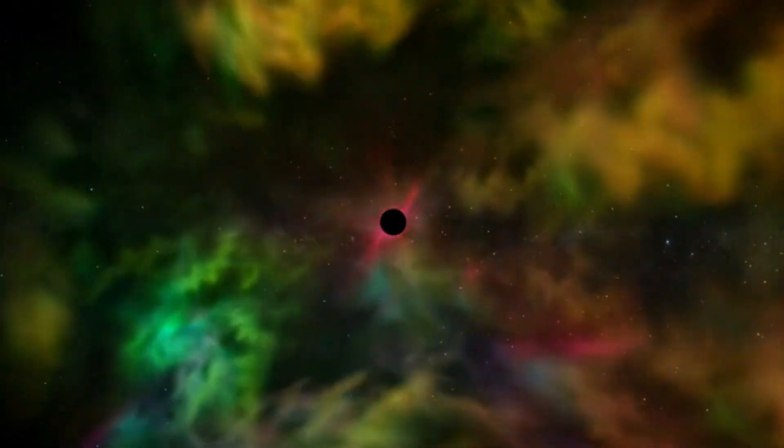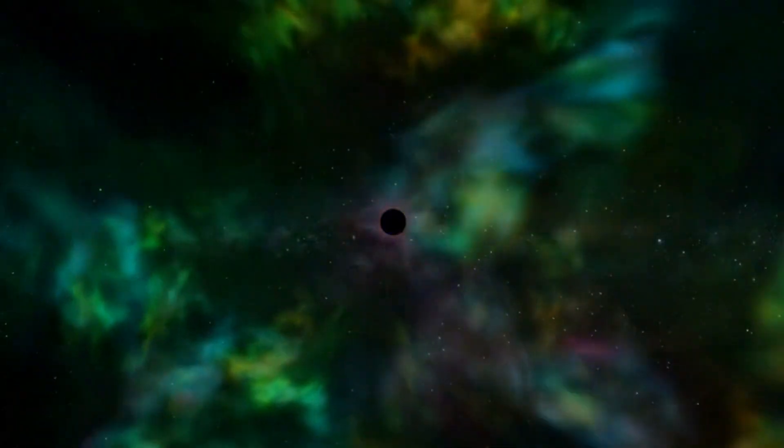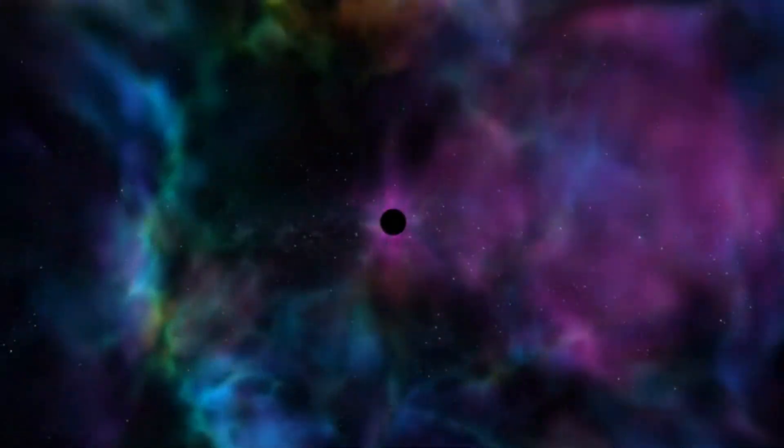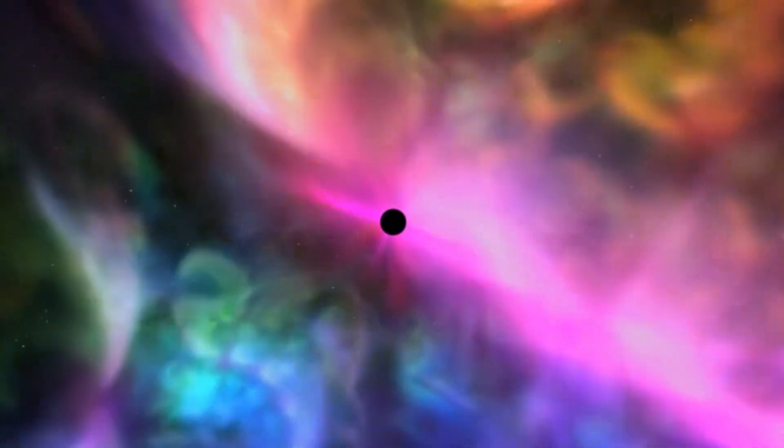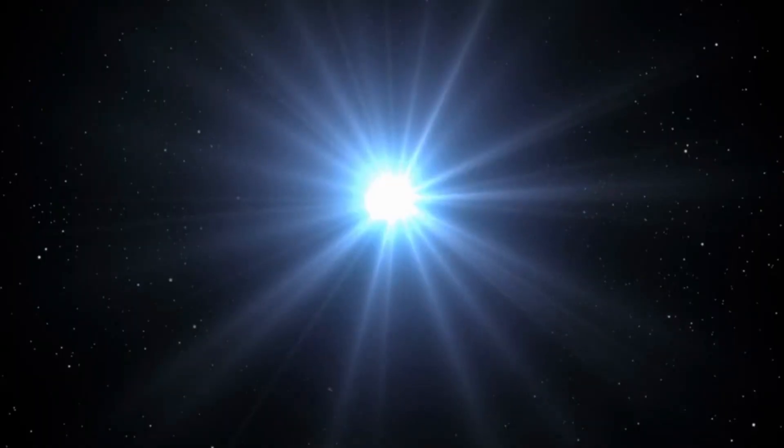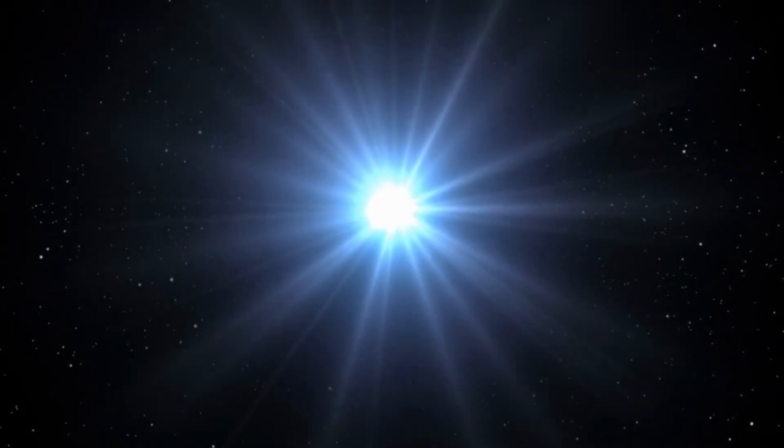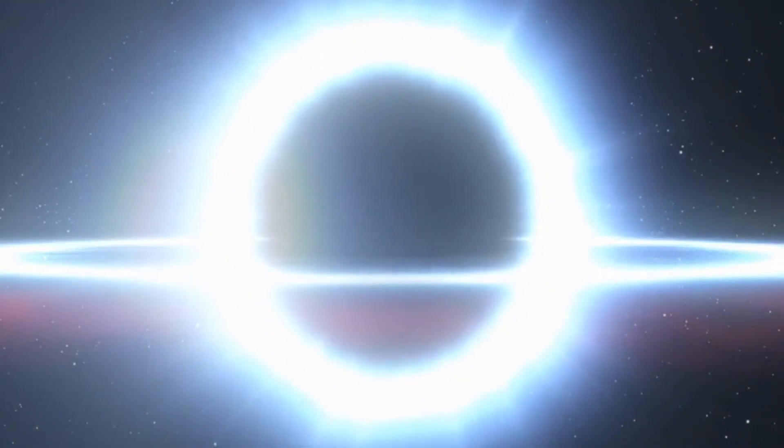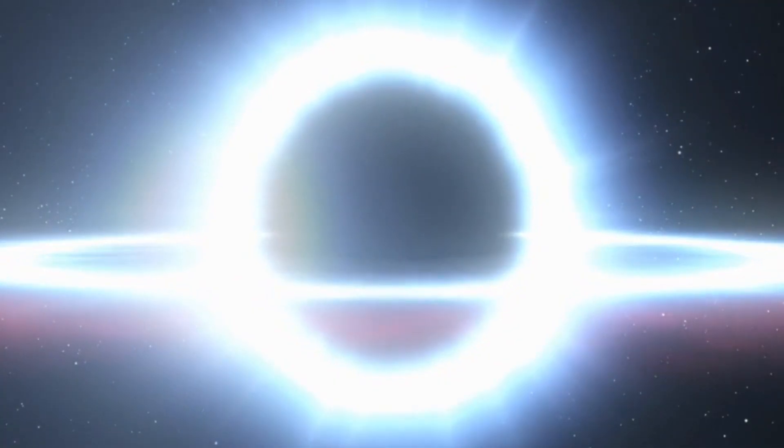When a star exhausts its nuclear fuel, it undergoes a catastrophic explosion known as a supernova, ejecting its outer layers into space while leaving behind a dense core. If the mass of this core exceeds a certain threshold, roughly three times the mass of the sun, it collapses into a black hole, a point of infinite density and gravity known as a singularity.